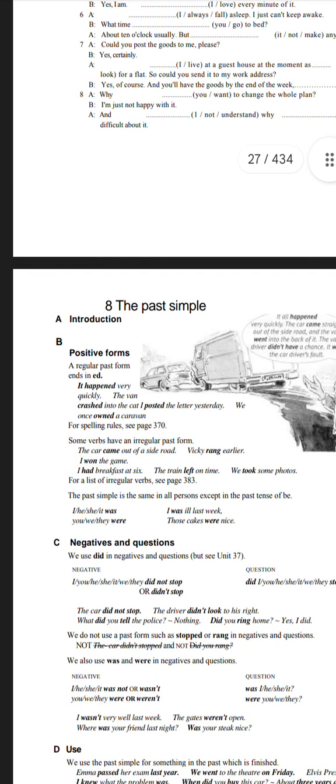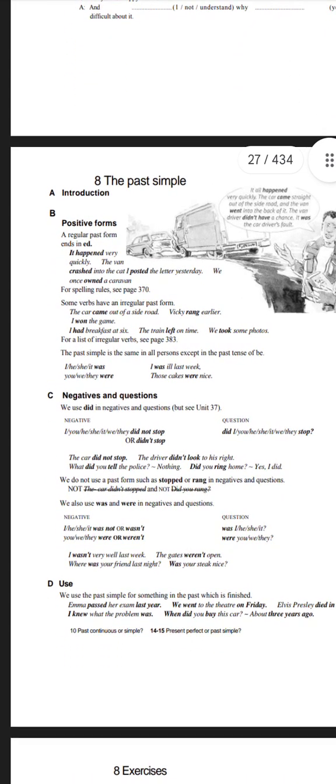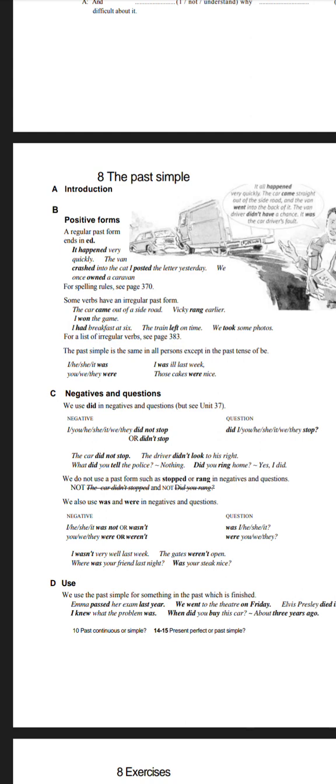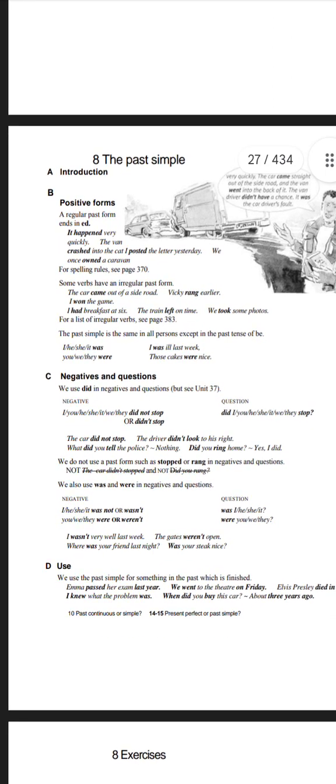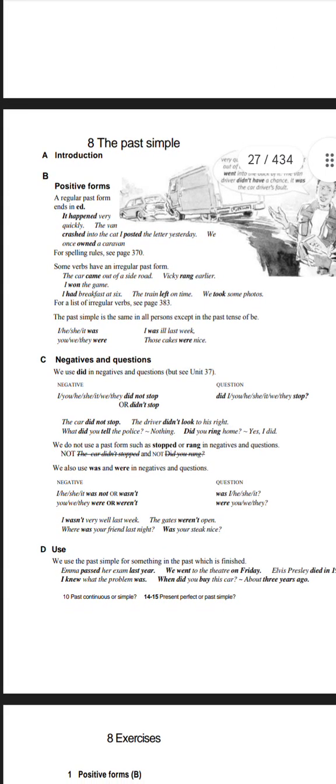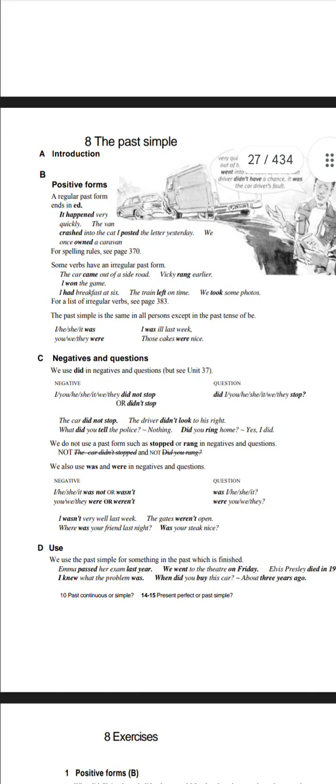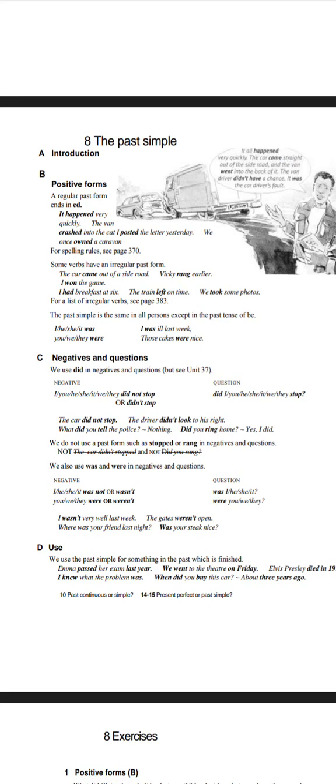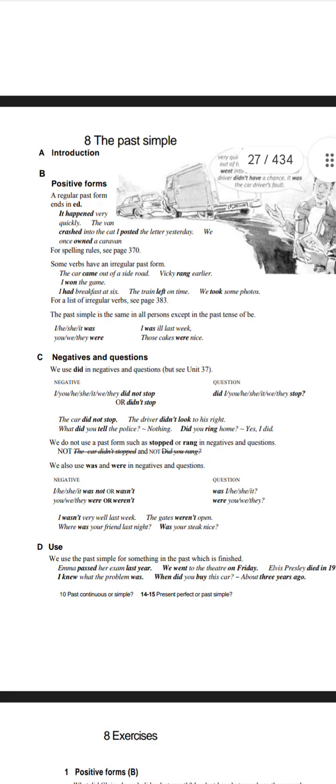Next topic is the past simple tense. Regular past forms end in ED. It happened very quickly. The van crashed into the car. I posted the letter yesterday. Some verbs have an irregular past form. The car came out of the side road. Wiki rang earlier. I won the game. The train left on time. We took some video.